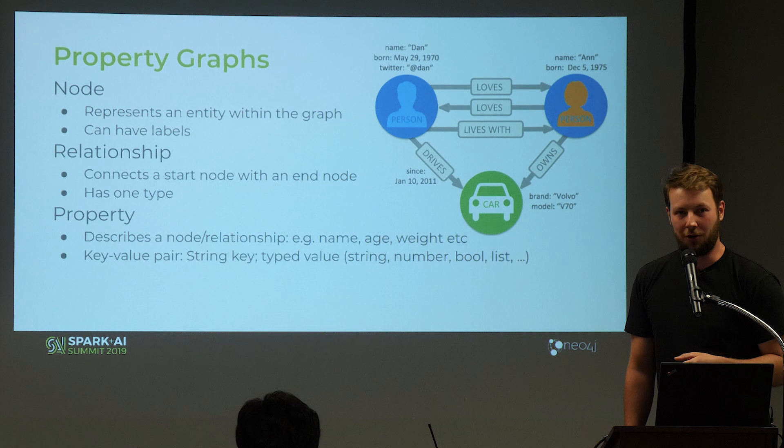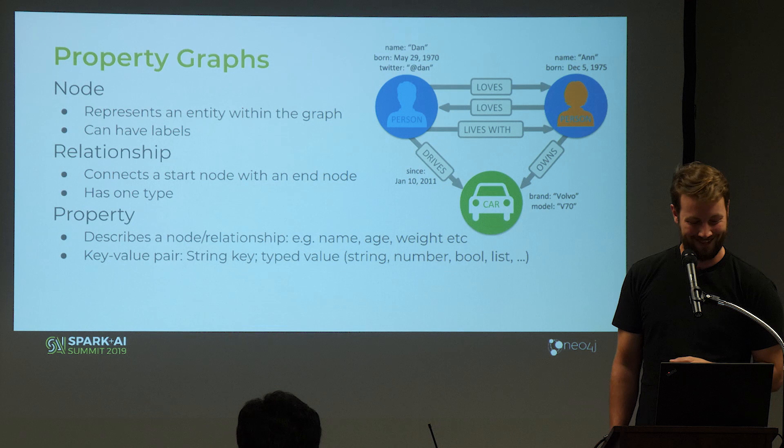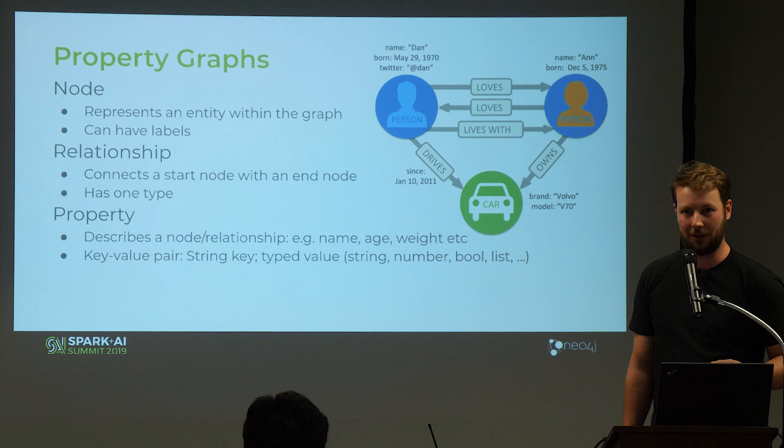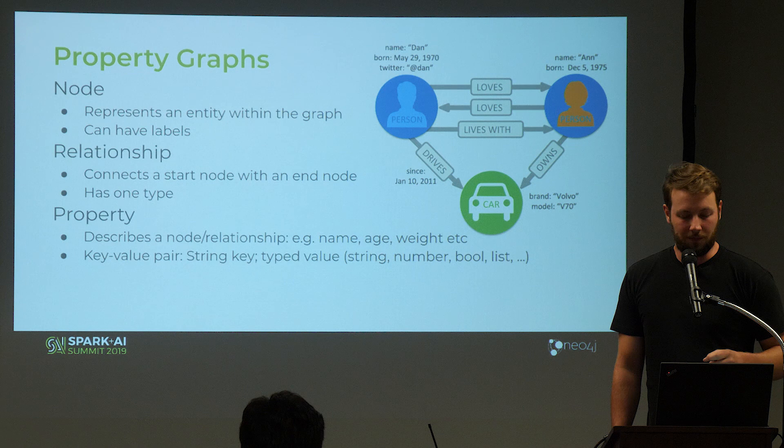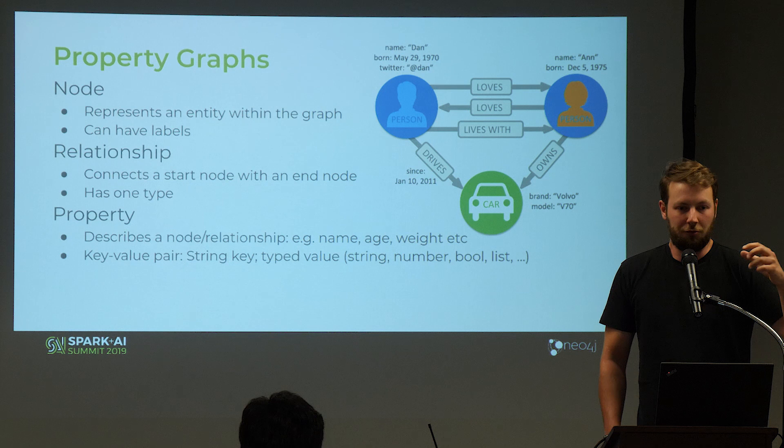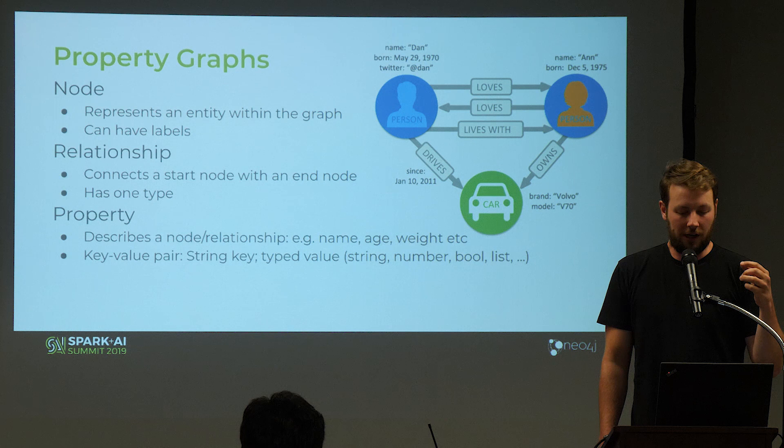A property graph is essentially a normal graph but with properties attached to it. Properties are like key-value stores. A graph consists of nodes, and nodes are normally like real-world entities you want to express in a model, like a person. They can have so-called properties — for example, the person on the upper left has the name Dan.